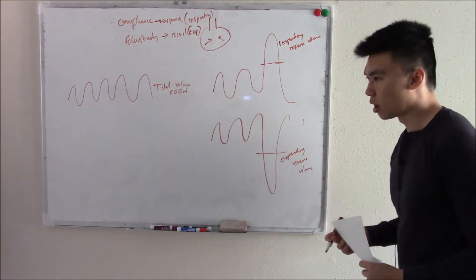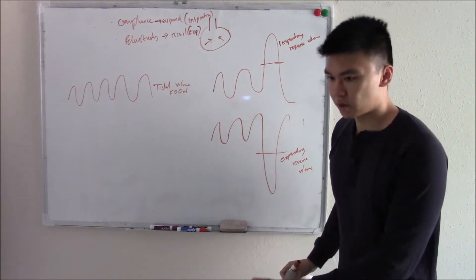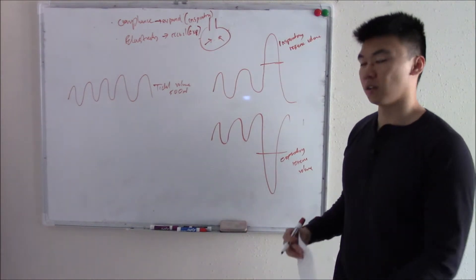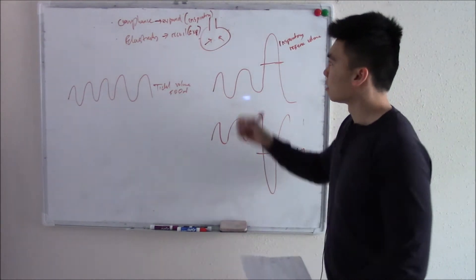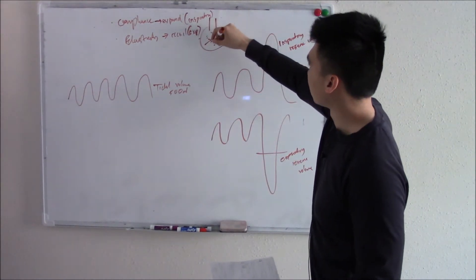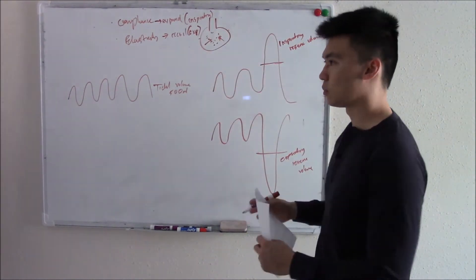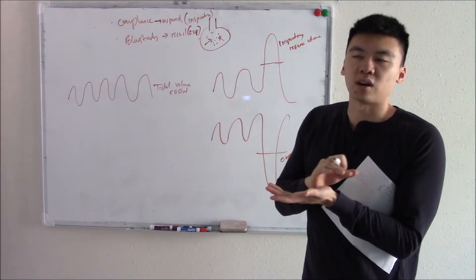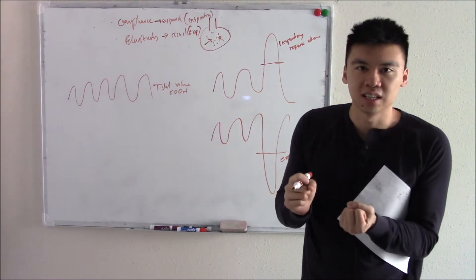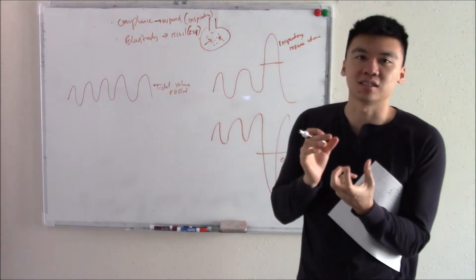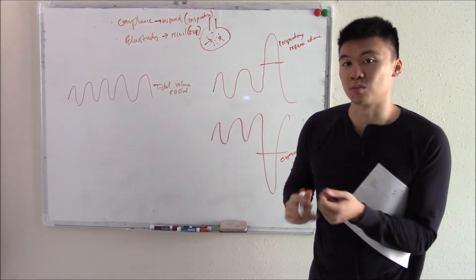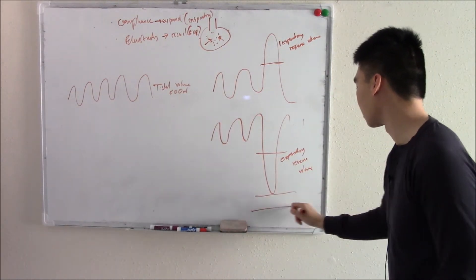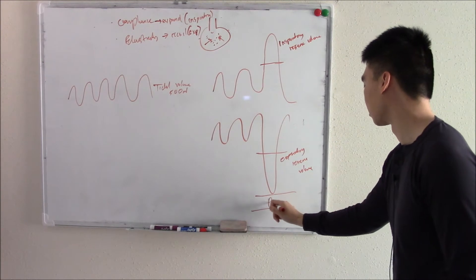Something you should know: even when you take the deepest breath out you can, even when you think there's no more air left in your lungs, there still is. There's still a little bit of residual air, and that's important because it keeps our alveoli open. You cannot get rid of it no matter how hard you breathe out. There's still some residual volume.